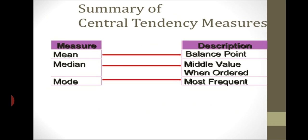Let's see a summary of central tendency. We have seen the content of this chapter: what is mean, problems based on mean for grouped and ungrouped data, same for median, and same for mode. In summary: mean means the balance point, median means the middle value, and mode means the most frequently occurring value. When solving computational problems, there are two common confusions — what is grouped data and what is ungrouped data.